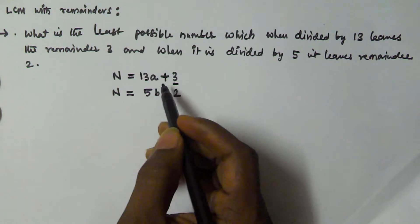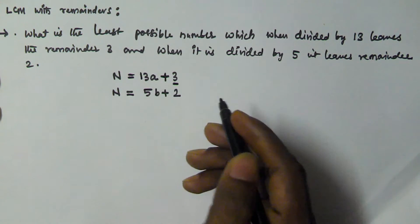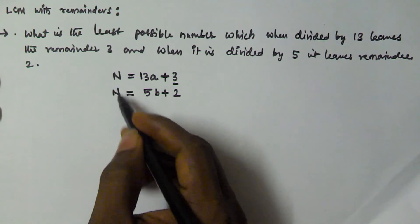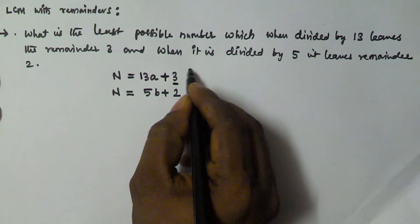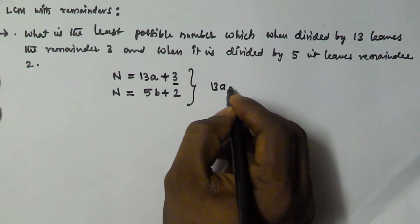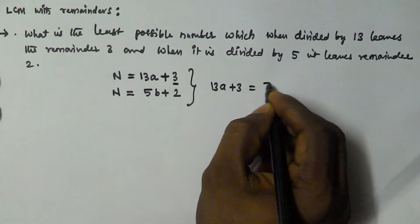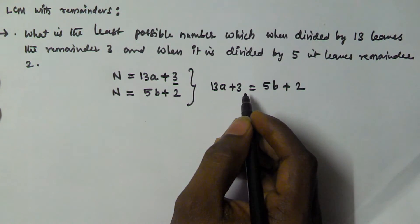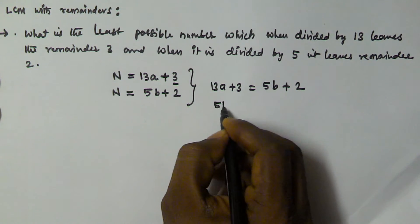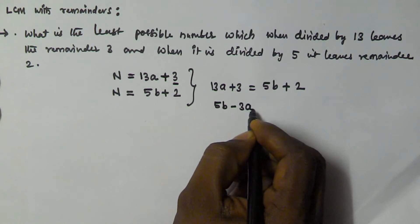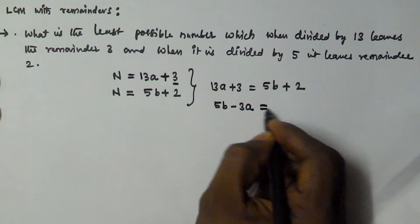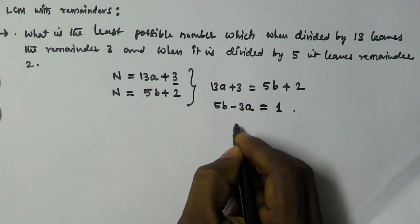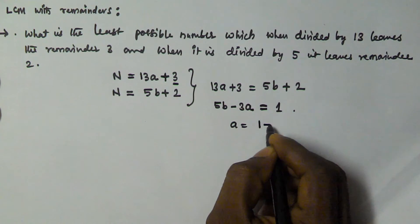Here a and b are quotients belonging to the set of integers. Since both expressions equal n, we can write 13a + 3 = 5b + 2, which simplifies to 5b - 13a = 1.